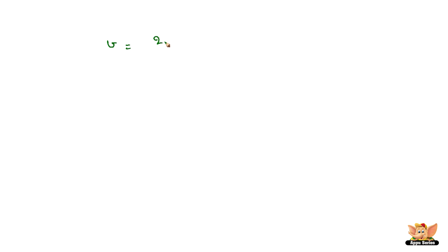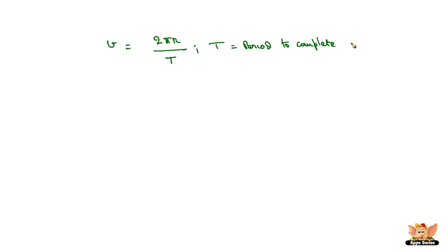Now, when an object is moving in circular motion, velocity is 2πr/T, where 2πr is the circumference — the distance of the path the planet takes — and T is the period to complete one revolution, which covers a distance of 2πr.